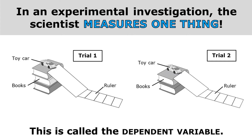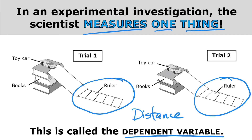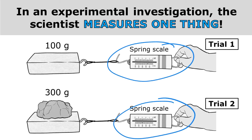In an experimental investigation, the scientist measures one thing, and that is called the dependent variable. In this investigation, we can see that a ruler is being used, and rulers measure distance. So the scientist is measuring the distance the car rolls from the ramp. In this other investigation, the scientist is using a spring scale, and spring scales measure force. So force is what is being measured in this investigation.